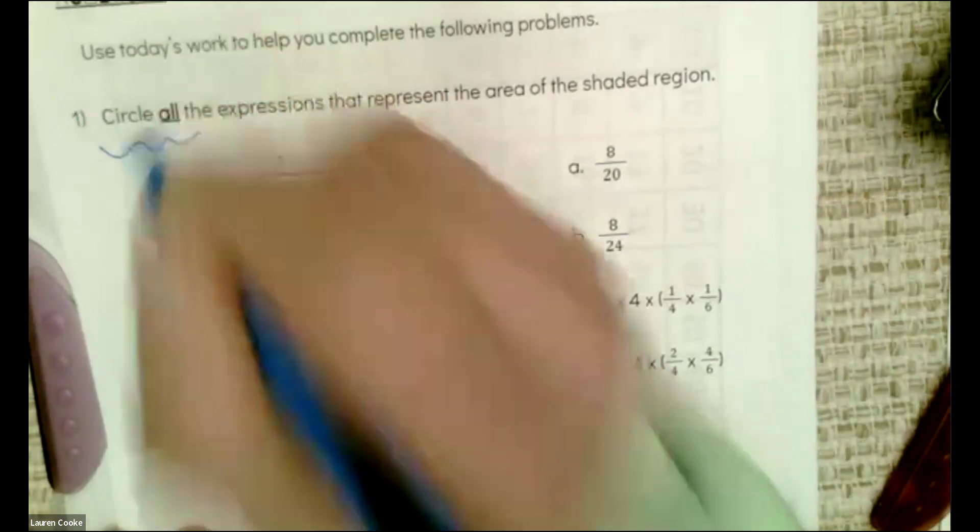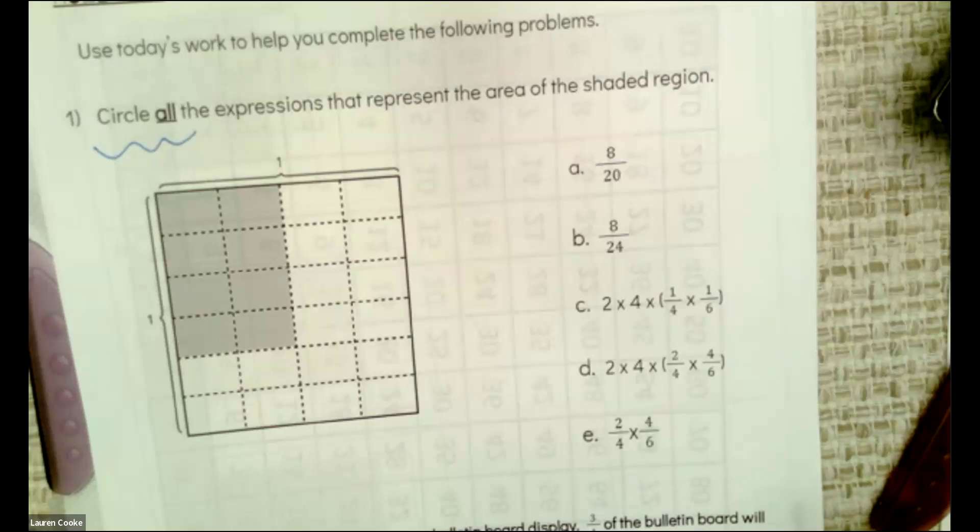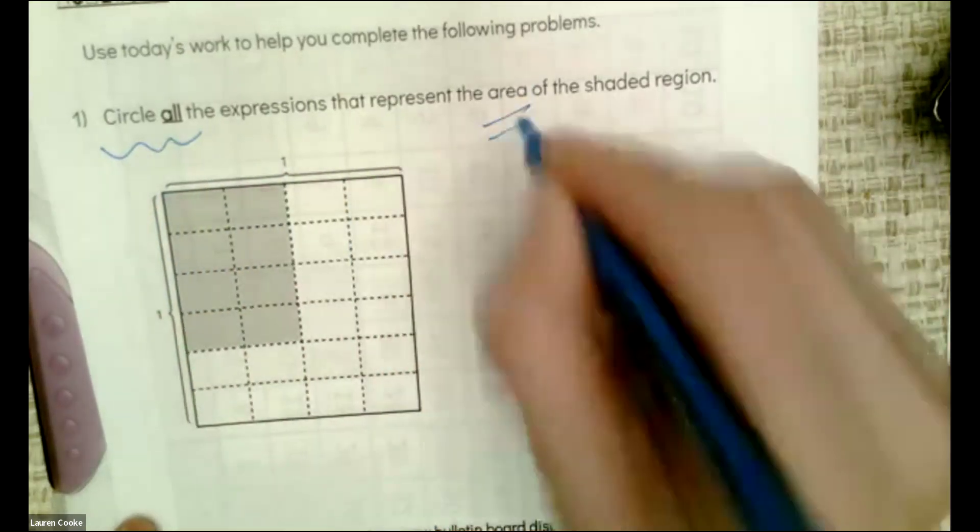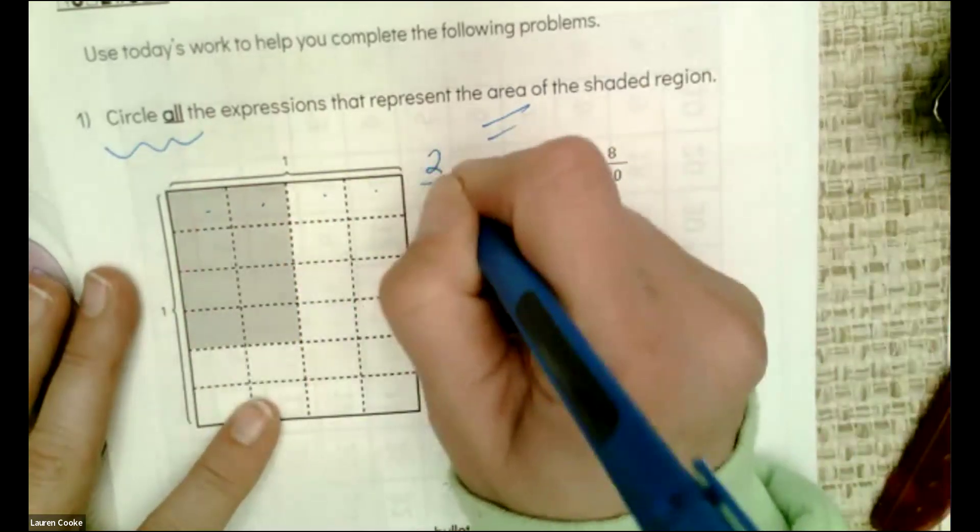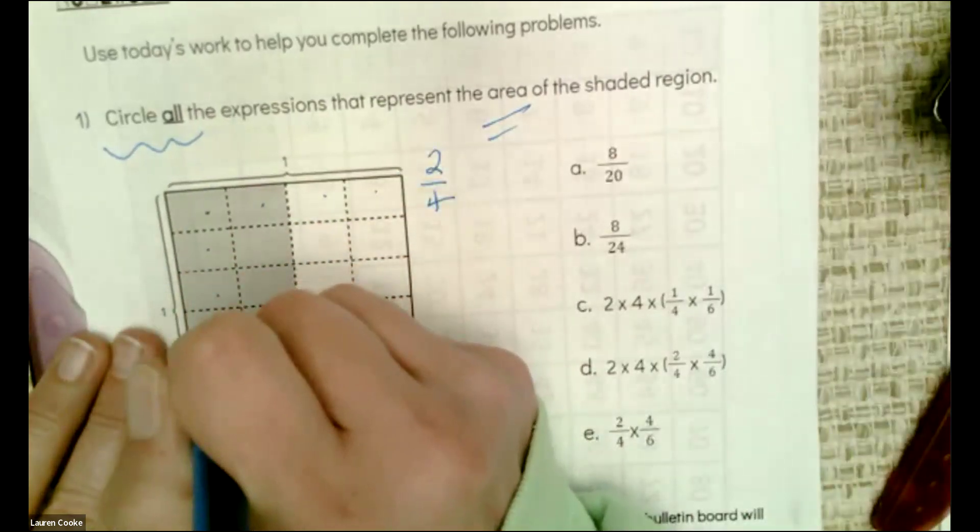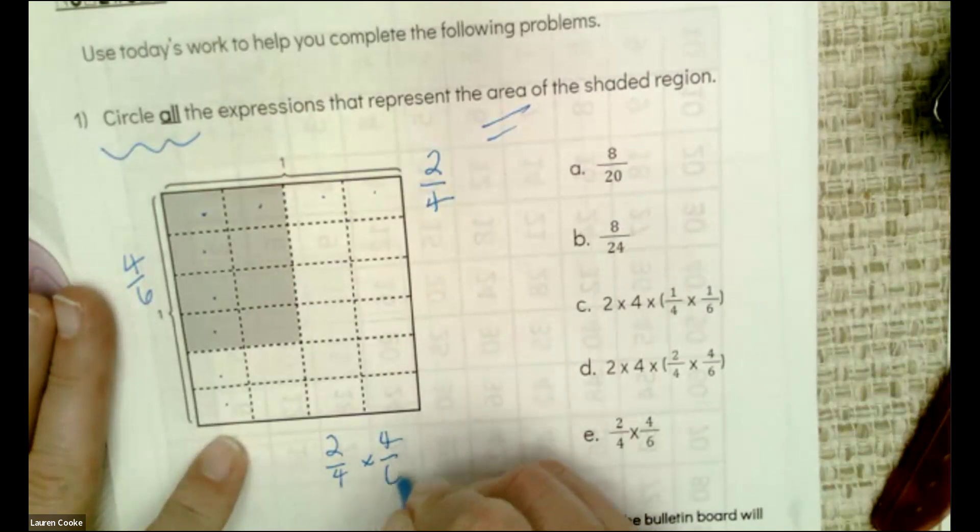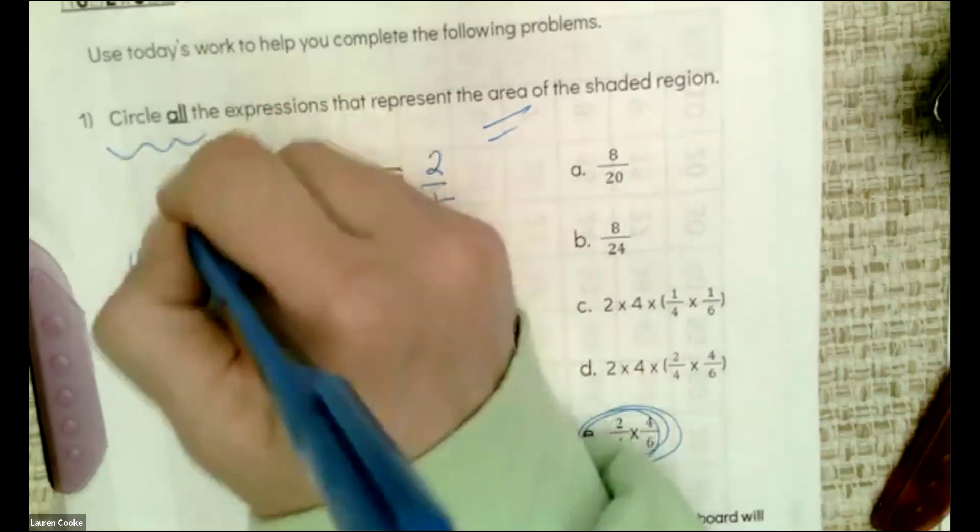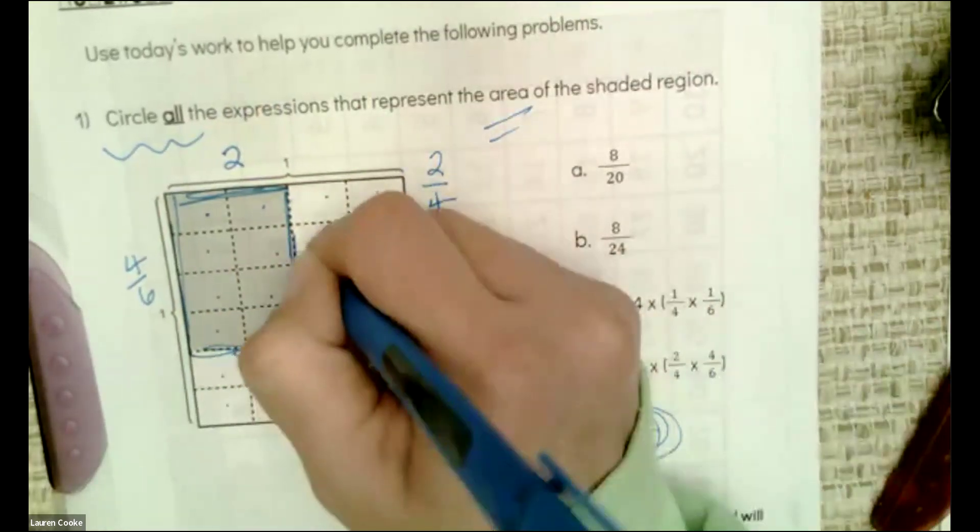I love starting with this circle all, because it means that we're going to find multiple different forms that are equivalent. And the more ways you can see things, the more fluid you are thinking through it, the stronger mathematician you are. All right. So let's see, circle all the expressions that represent the area of the shaded region. So I know I have one, two, three, four. So I have two out of four. And then I have six, four out of six. So I know one thing I have is two fourths times four, six. So, so far I know I have that.